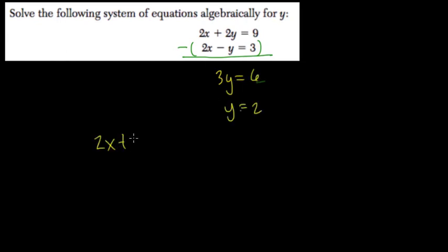What does x equal? 2x plus 2y is 9, so 2 times 2 is 4.